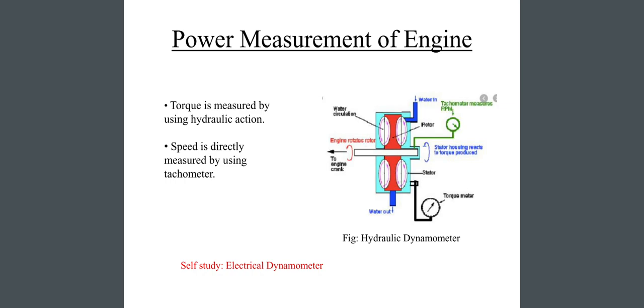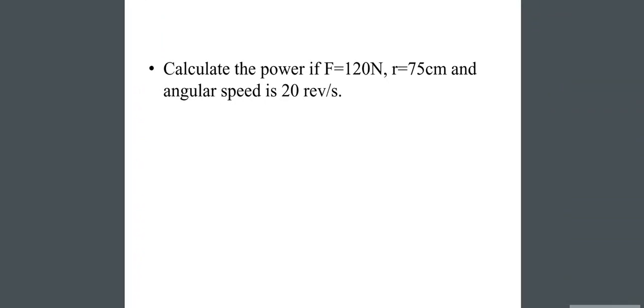Self study: electrical dynamometer. So, there is a problem. Calculate the power if force equals 120 newton, radius r equals 75 centimeter, and angular speed is 20 revolutions per second.